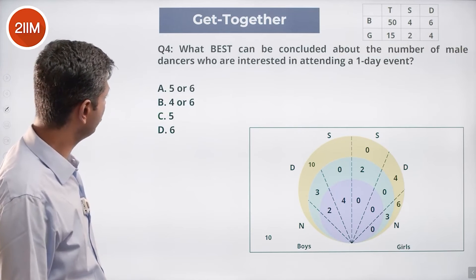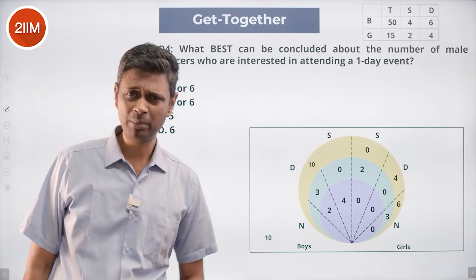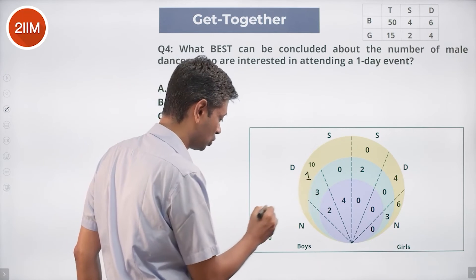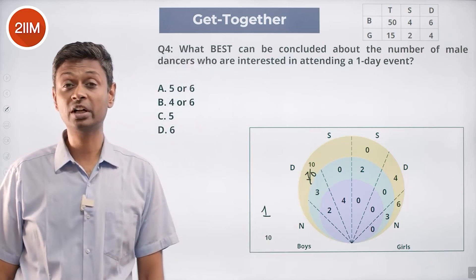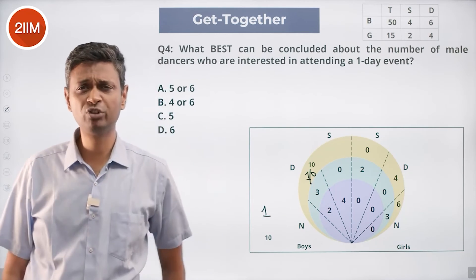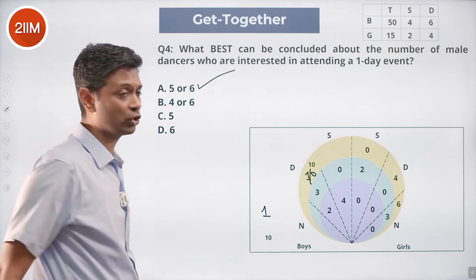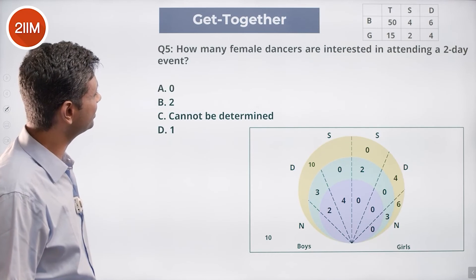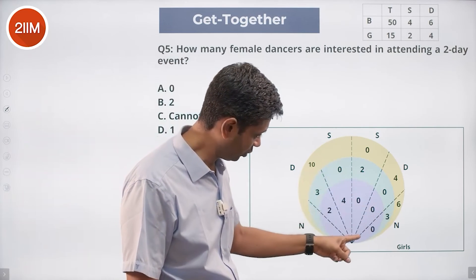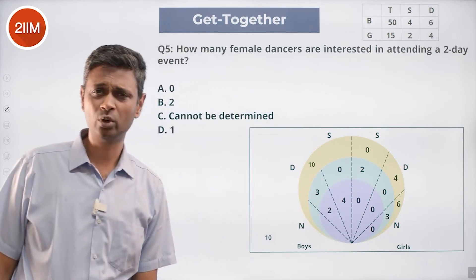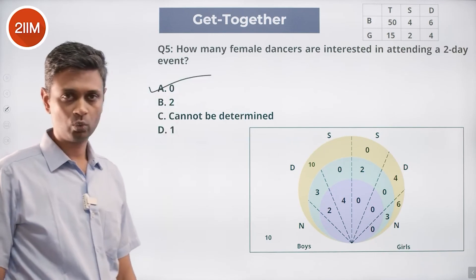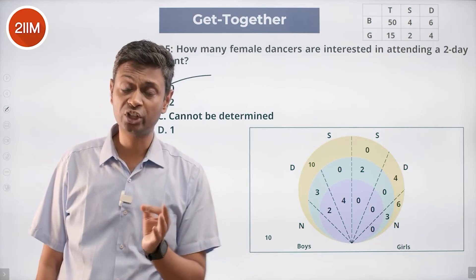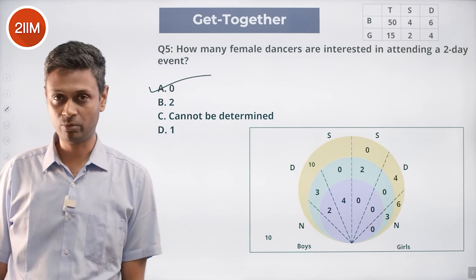What can we best conclude about the number of male dancers interested in attending a one-day event? Five male dancers are accounted for in two-day or three-day. The sixth — the missing one — could be in one-day-only or could be outside. So the number interested in one-day but not two-day could be zero or one, meaning the total could be five or six — both are possible. How many female dancers are interested in a two-day event? Zero — confirmed across all regions. This was a super challenging question, even though the solution looks doable.